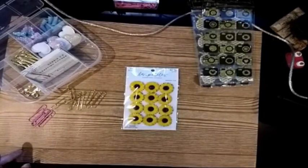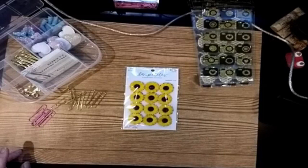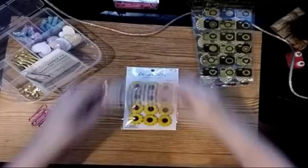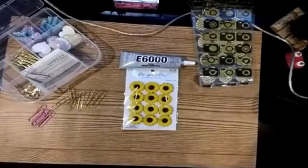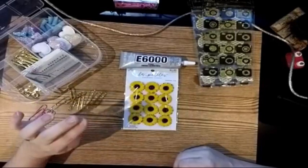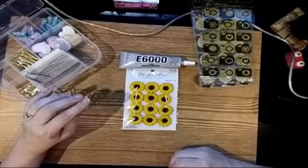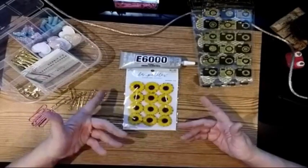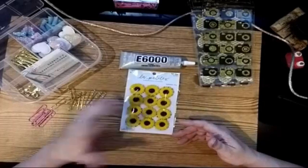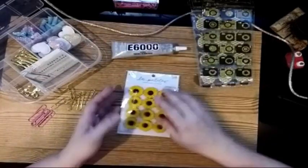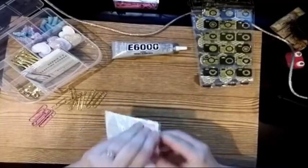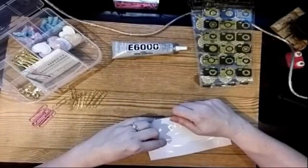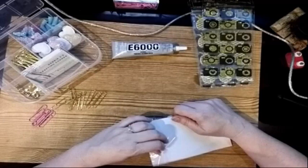I have my glue gun heating up, and that's the type of adhesive that we're going to be using for these. Another one that I use when I make these is E6000. This is pretty much a jewelry type of adhesive, so a lot of things that won't stick to metals and things like that, this will usually hold them. But I'm going to just work with the hot glue because that's usually easier to work with.